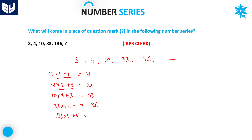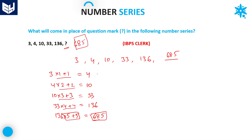Every time the pattern is ×1+1, ×2+2, ×3+3, ×4+4, so the next one must be ×5+5. So 136 × 5 = 680, and 680 + 5 = 685. Therefore, in place of the question mark, 685 should be there. The logic is ×1+1, ×2+2, ×3+3, ×4+4, ×5+5. That is the answer: 136 × 5 + 5 = 685. This problem is from ASTRA and IBPS Clerk exams.